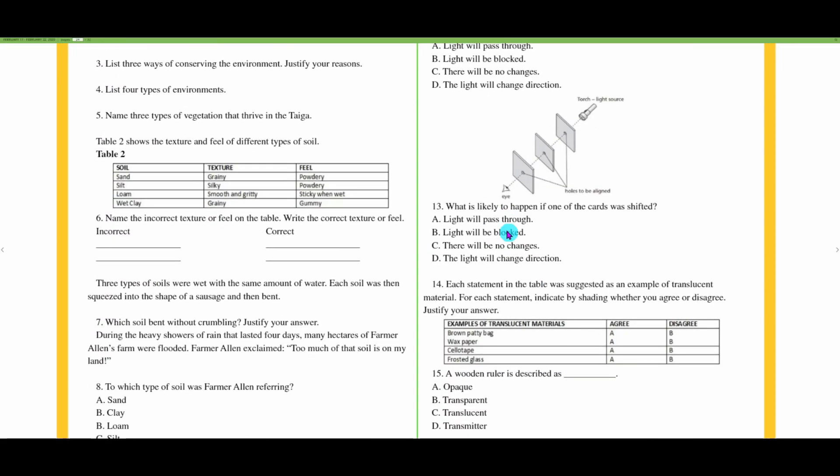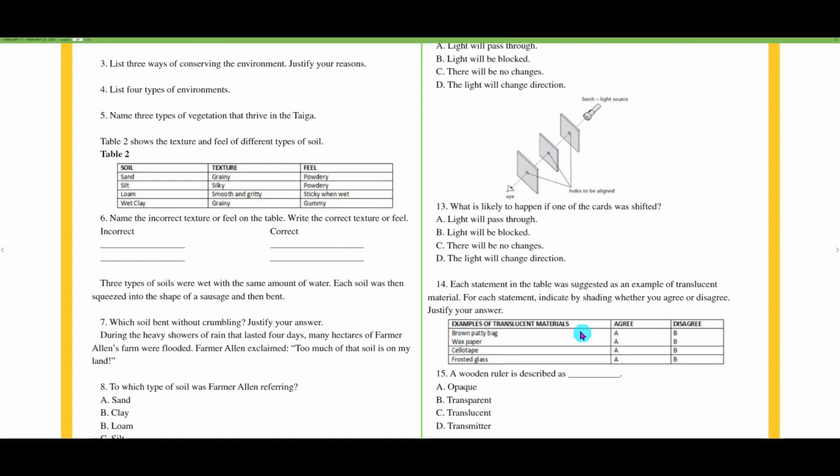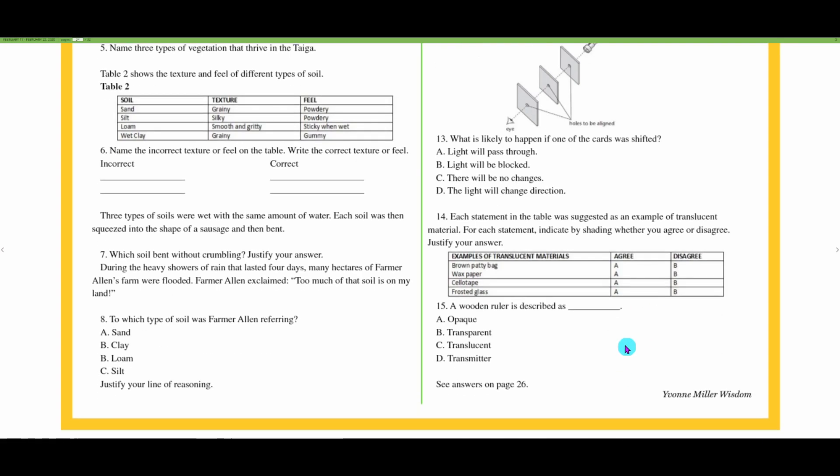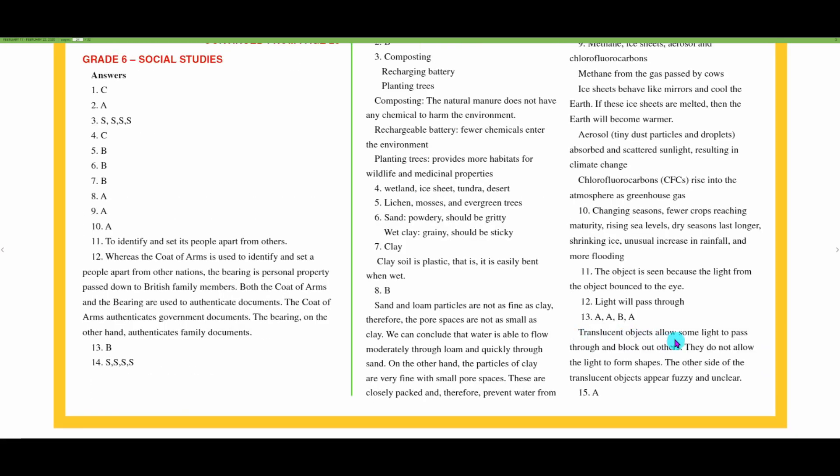Let's look at fourteen. They have A, A, B, A. These line up with what we had said. Translucent objects allow some light to pass through and block out others. They do not allow light to form shapes. The other side of translucent objects appear fuzzy and unclear.